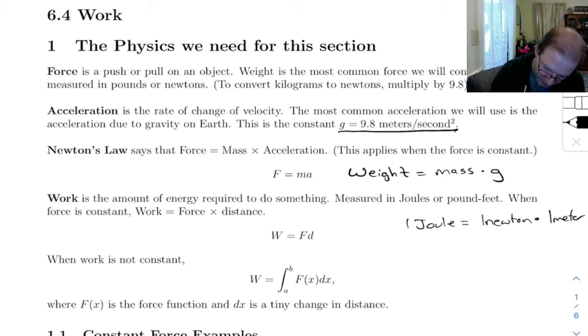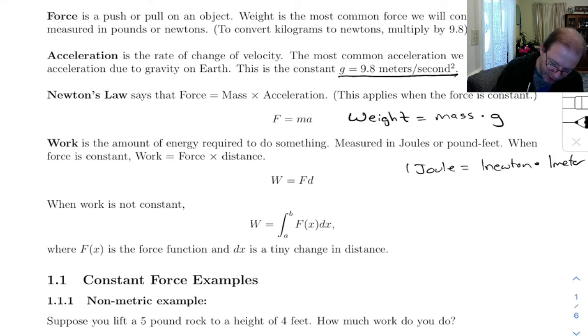And we've got this equation here: work is equal to force times distance. Now that's the equation we use when the work is constant. If work is not constant, then instead of multiplying force times distance, what we do is integrate force over distance. So this is a force function, and then dx is a tiny change in distance.